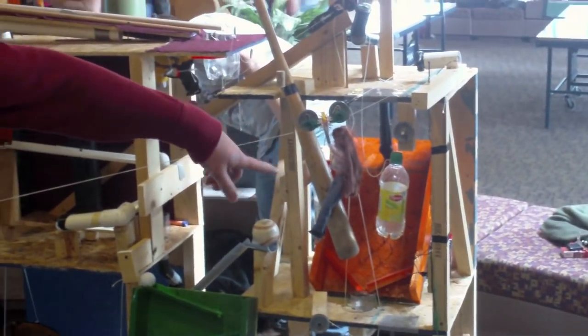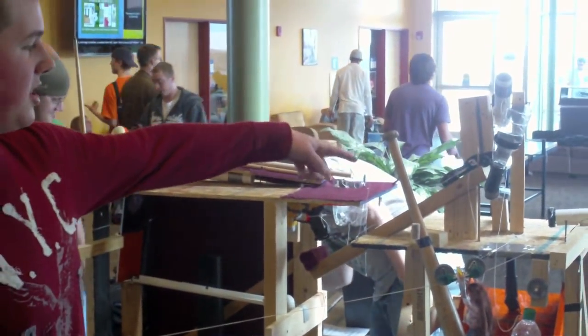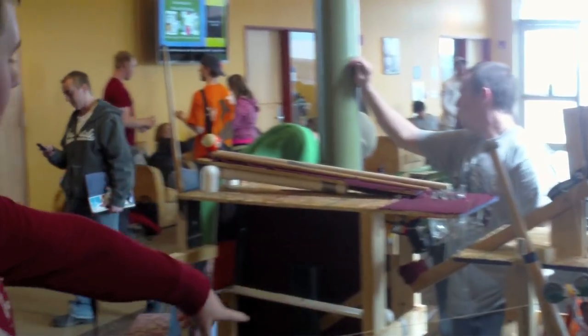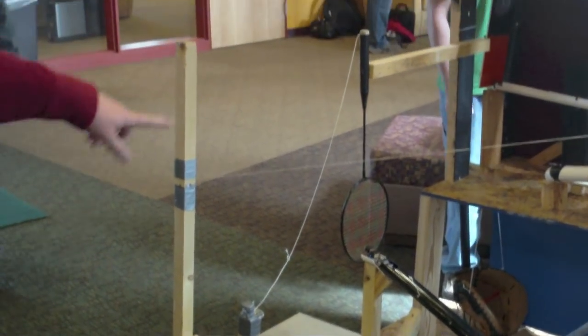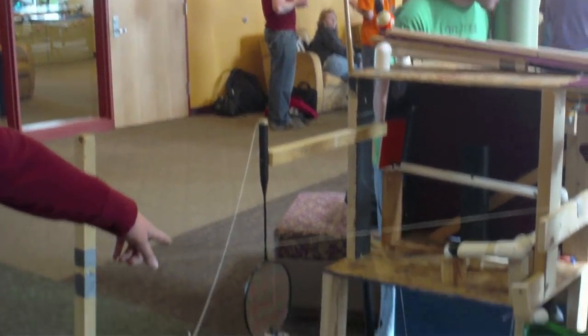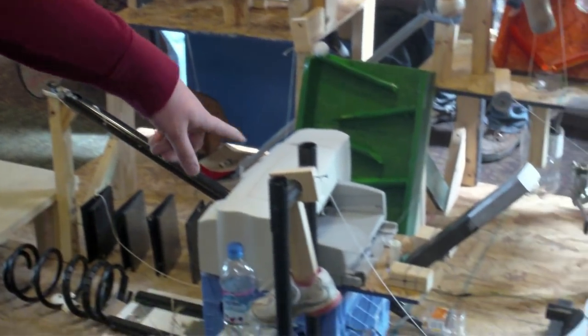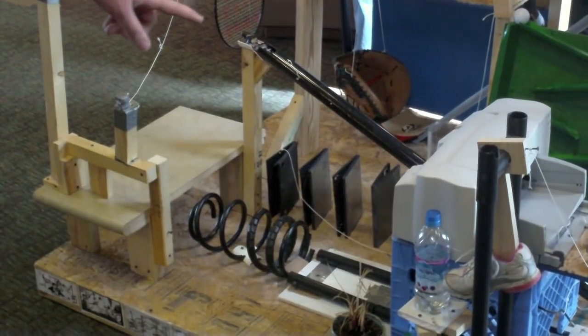First we start by flipping the switch, that starts the motor, releases the Barbie down the hook line. She hits the string, knocks over the block, pulls down the bed and the bracket, knocks the matchbox car down the track into the cup, starts the dominoes, dominoes fall over.